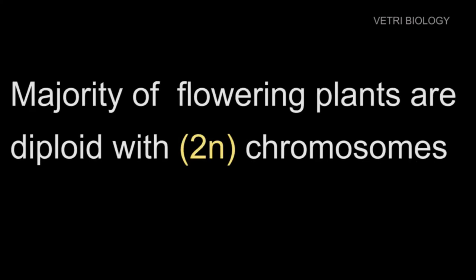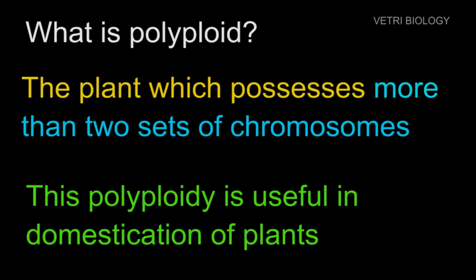The next type of conventional plant breeding method is polyploid breeding. The majority of flowering plants are diploid, that is 2N, meaning they have 2 sets of chromosomes. A plant which possesses more than 2 sets of chromosomes is called a polyploid. This polyploid condition is useful in the domestication of plants.